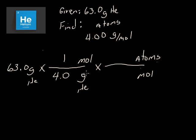And I know in one mole of anything, there's 6.022 times 10 to the 23rd atoms. So I'm going to multiply 63 times 1 times 6.022 times 10 to the 23rd, and divide it by 4.